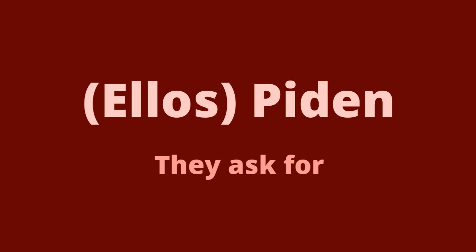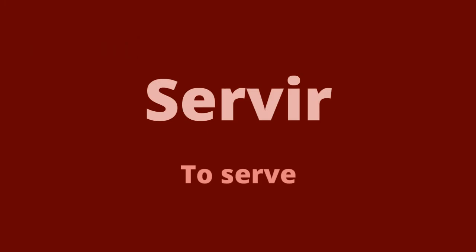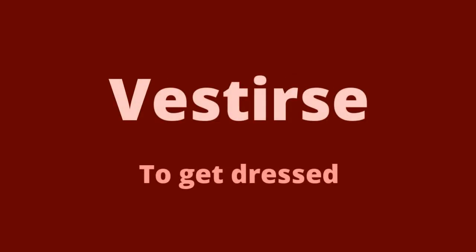Now let's see two more verbs that follow the same irregularity. 'To serve' is servir, and 'to get dressed' is vestirse. These verbs follow the same E-to-I stem change pattern in the present tense.